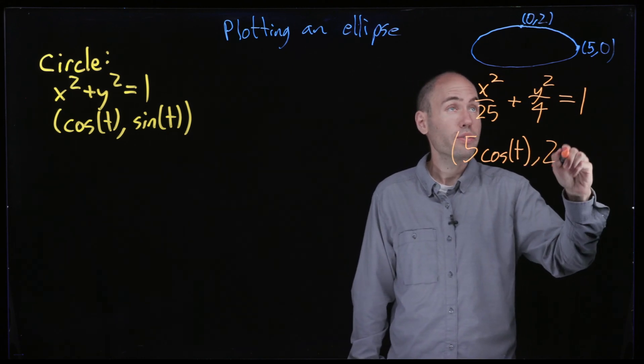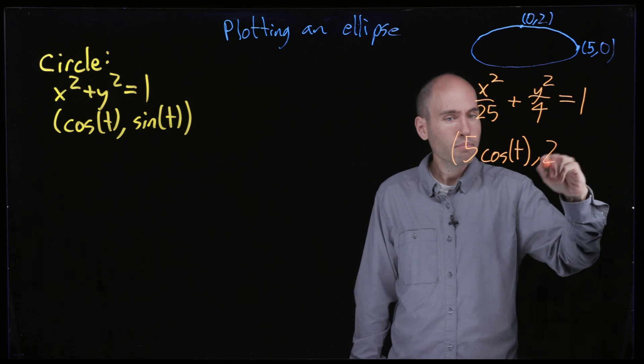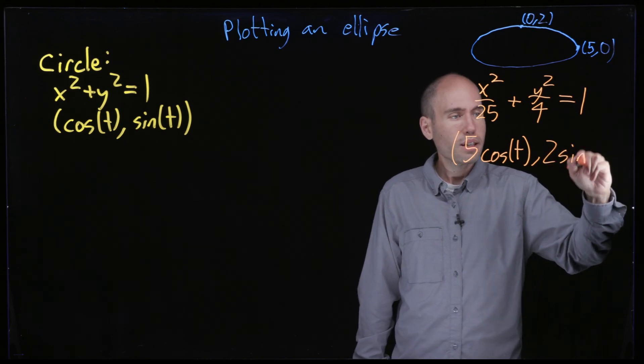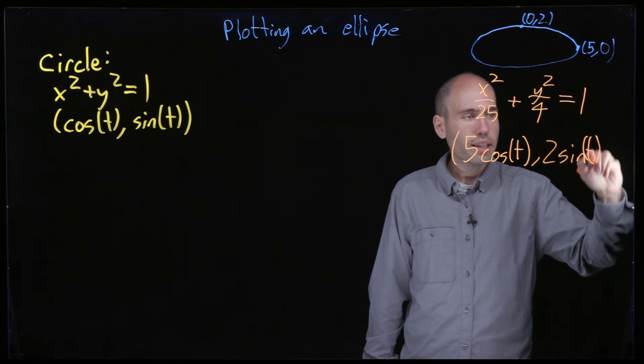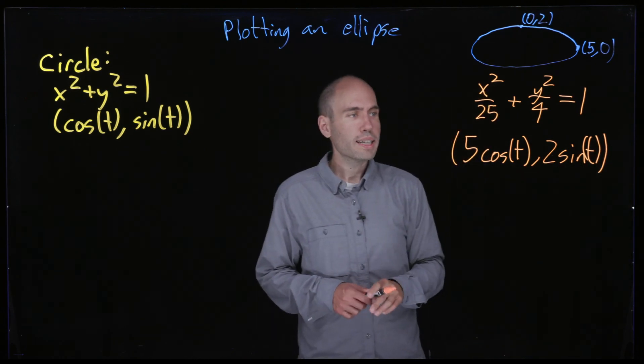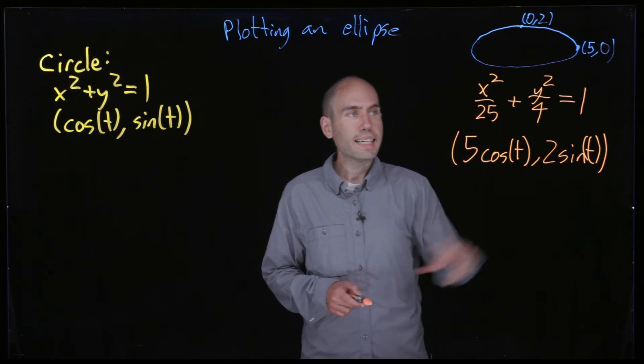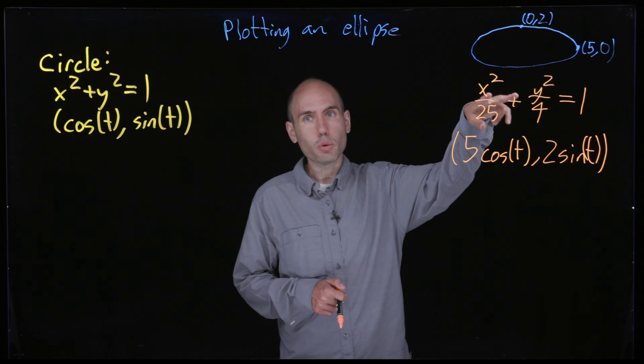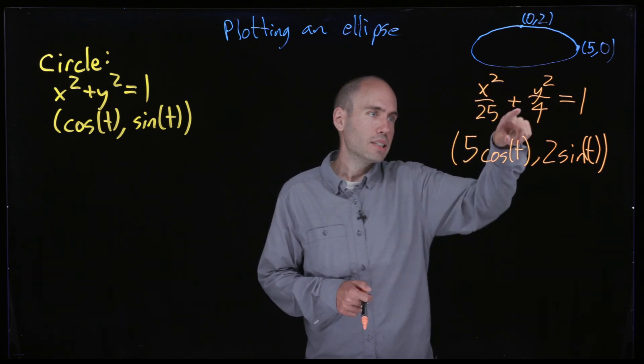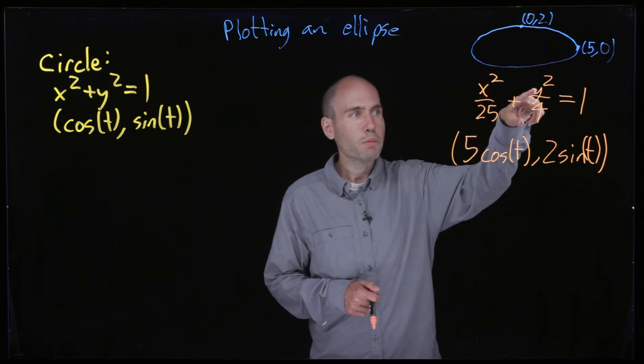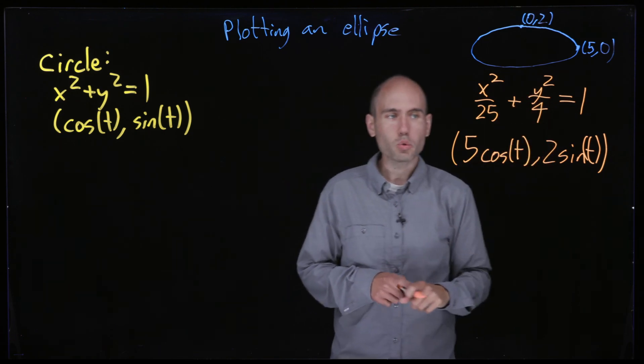And you practice with this sort of thing a lot in MATH2D. And similarly for the y coordinate we'll use 2 sine t. And if you try plugging that into this equation you'll get that it does satisfy x squared over 25 plus y squared over 4 equals 1.